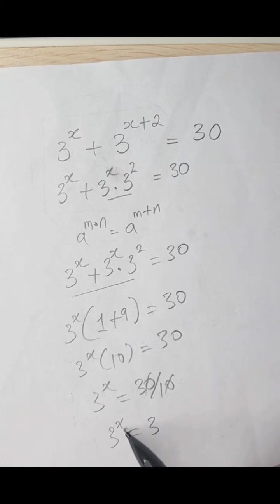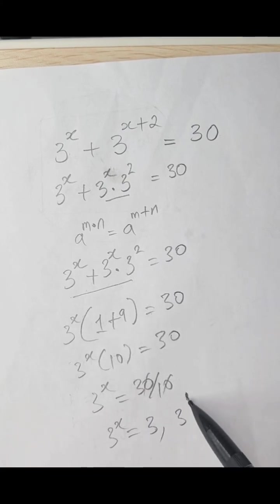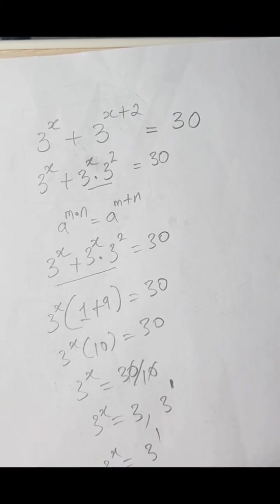We have 3 raised to the power x equals 3. This can be rewritten as 3 raised to the power 1. So 3 to the x is equal to 3 raised to the power 1.